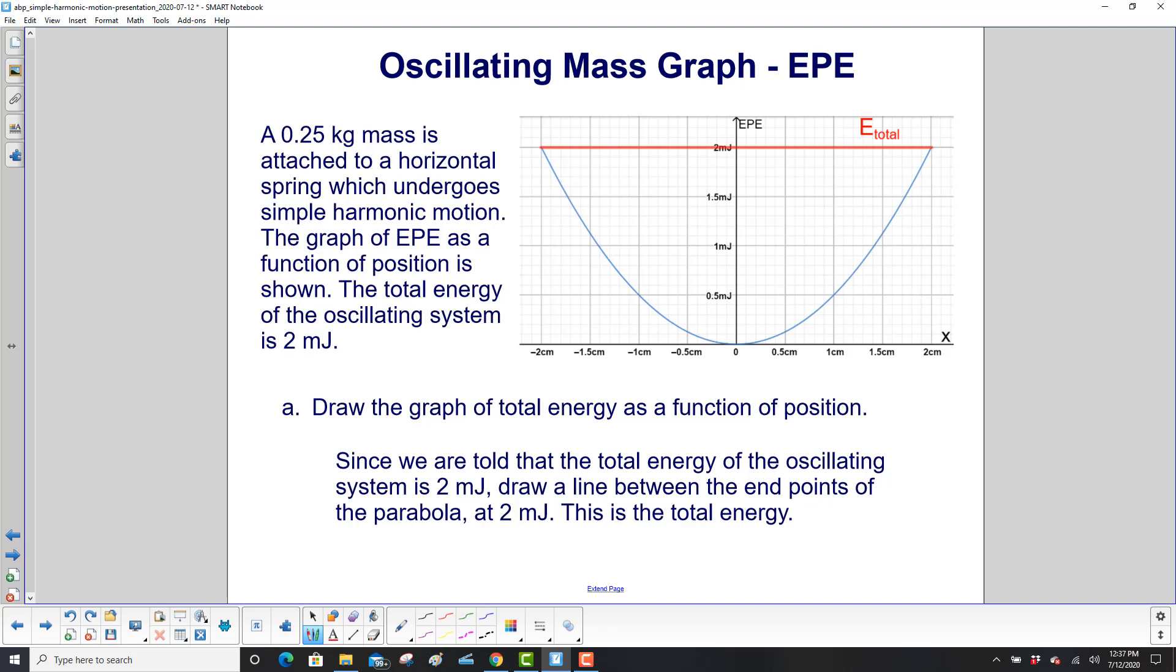Draw the graph of total energy as a function of position. Look at this here, total energy of the oscillating system is 2 millijoules. And we're not told that there's any friction, so that total energy will stay the same at every point in the movement of this oscillating mass. So we draw a horizontal line at 2 millijoules.